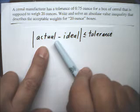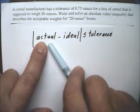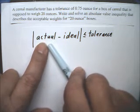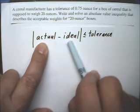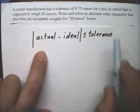And the Actual is X because it could be anything, and that's what we're testing. The Ideal is 20 ounces, then less than or equal to the tolerance, which is .75.